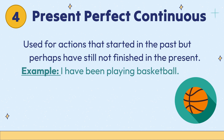And the last one is present perfect continuous. It is used for actions that started in the past but perhaps have still not finished in the present. For example: I have been playing basketball.